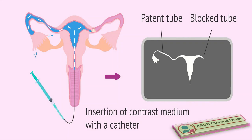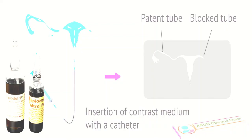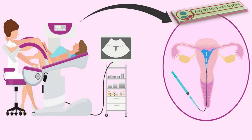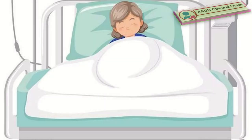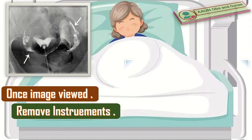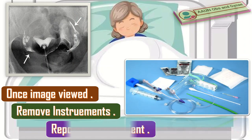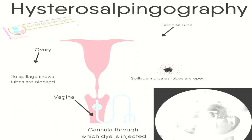I will insert the HSG cannula or catheter into the cervical os, then inject the radio-opaque dye — already drawn in a 20 cc syringe, for example Lipiodol. I will watch for discomfort or pain of the patient during the whole procedure. Once the image is viewed, I will remove the instruments and reposition the patient.